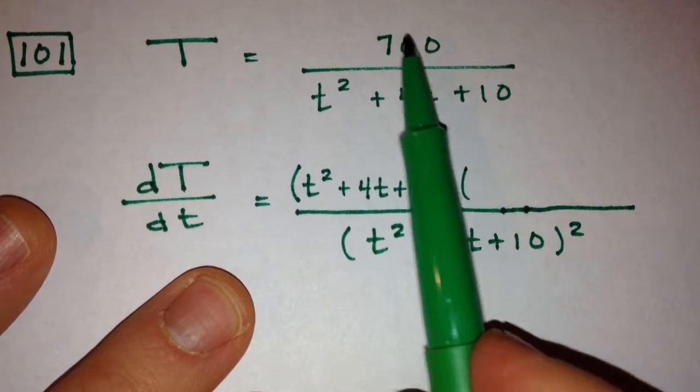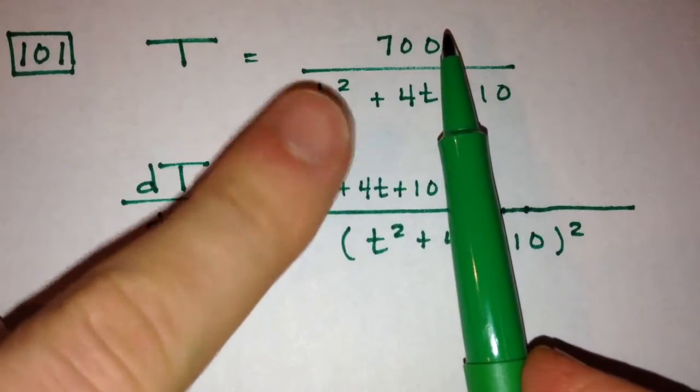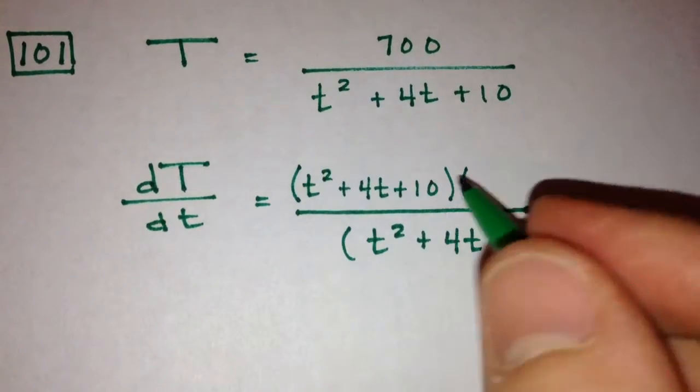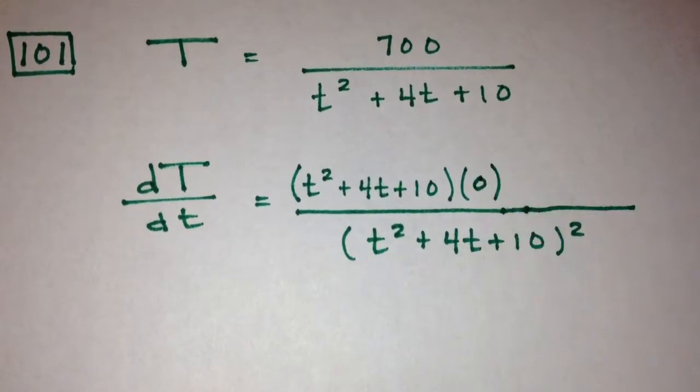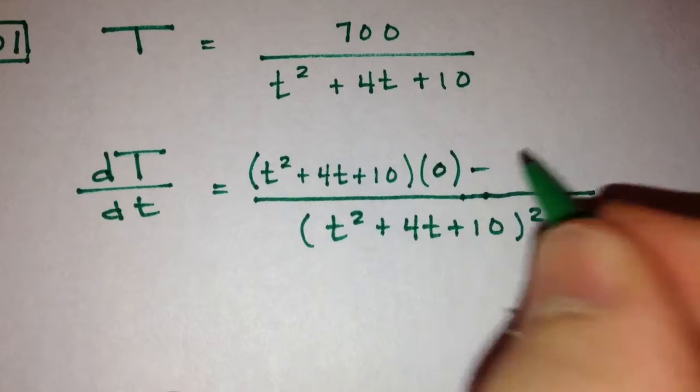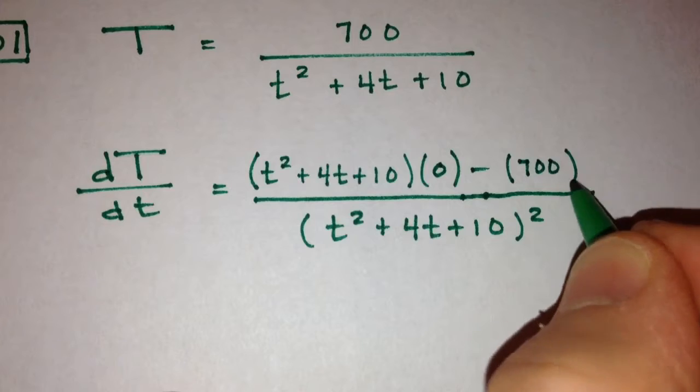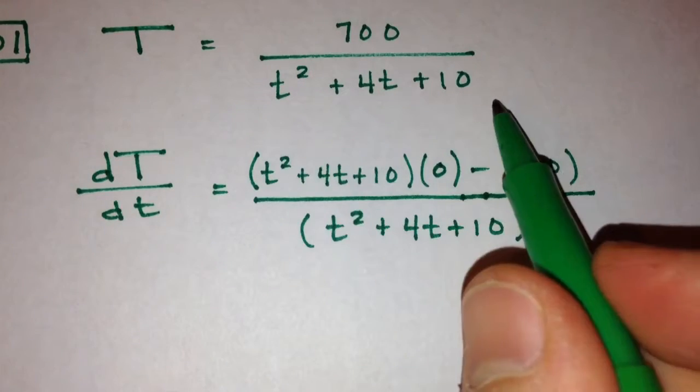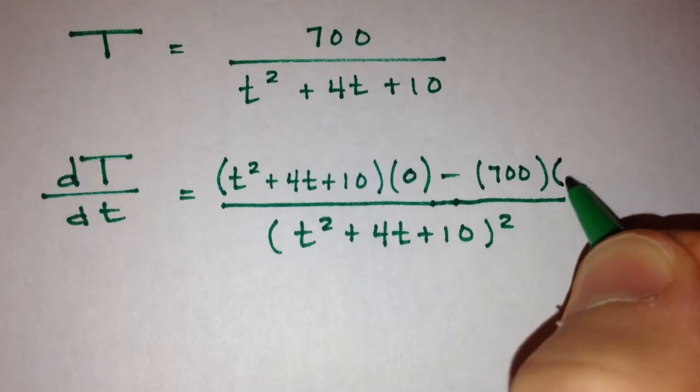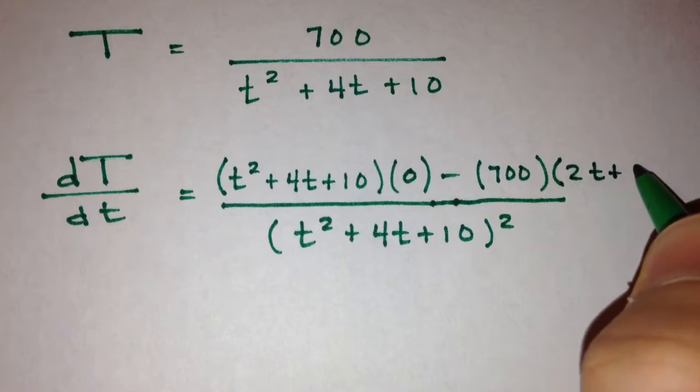Now be careful. That numerator is 700, which is a constant. Therefore, when we take the derivative of a constant, we get 0. That whole first term will disappear. Minus the numerator is multiplied by the derivative of this denominator, which would be 2t plus 4.